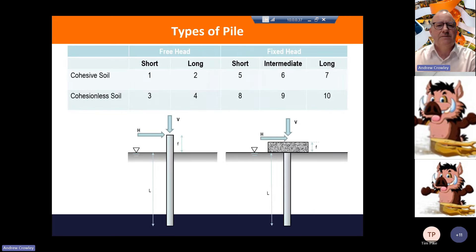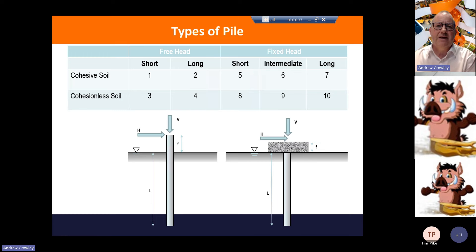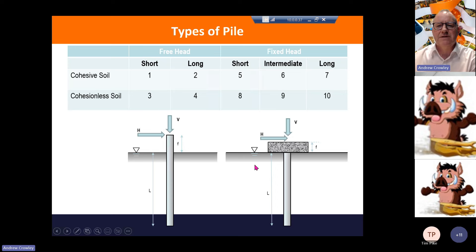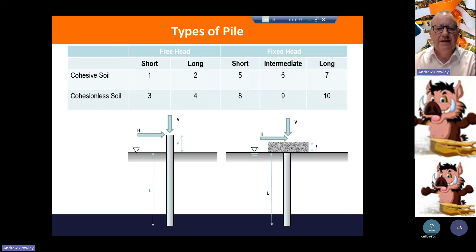So what kinds of pile do you need to consider? First of all, there's the difference between cohesive soils and cohesionless soils. You've also got a distinction between freehead and fixedhead piles. Freehead piles are split into short and long, and fixedhead piles are split into short, intermediate, and long. That will determine the shape of the deformed pile and therefore the moment that will arise in the pile. A fixedhead pile is one where there's a big lump of concrete on top — if it's just a timber beam nailed to the top, it's probably a freehead pile. It's really about what sort of rotation the top of the pile can undergo.